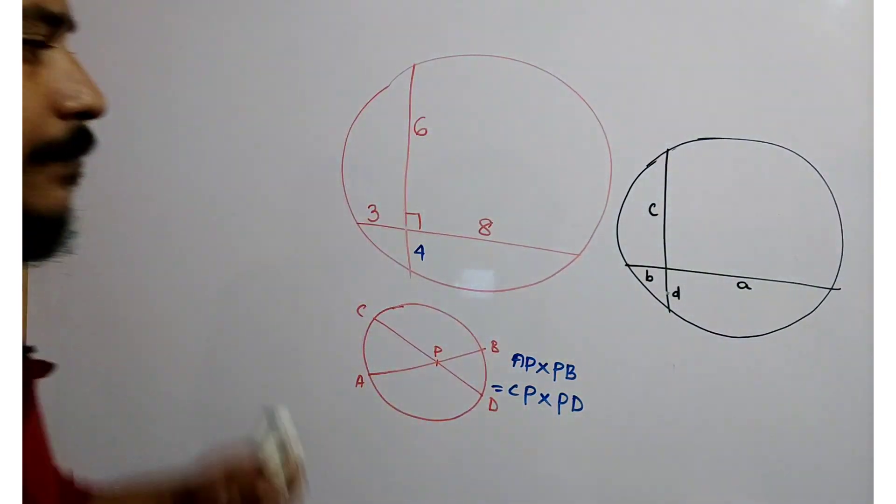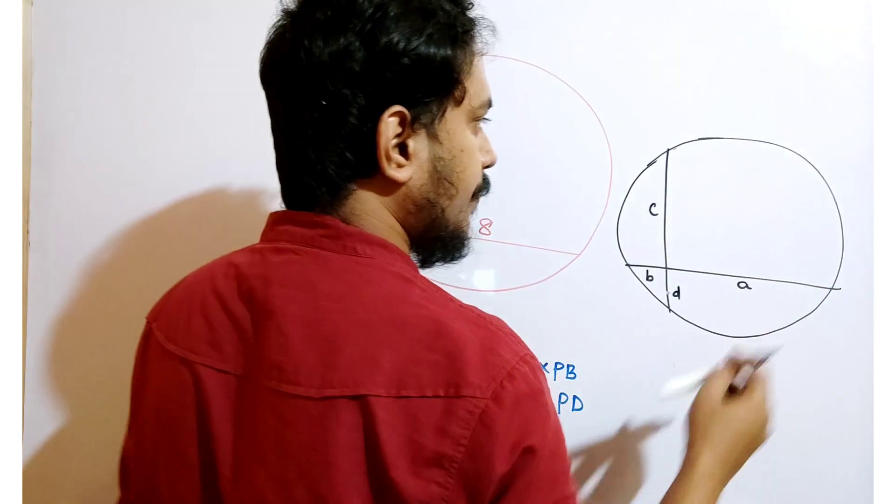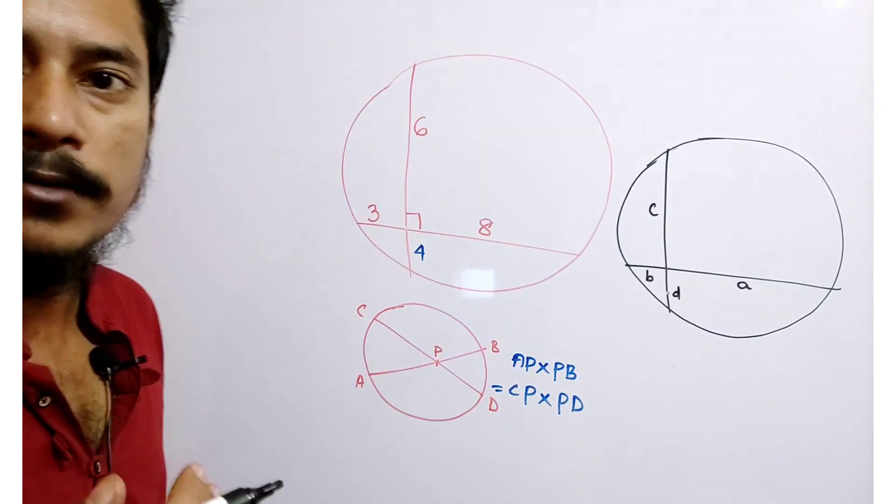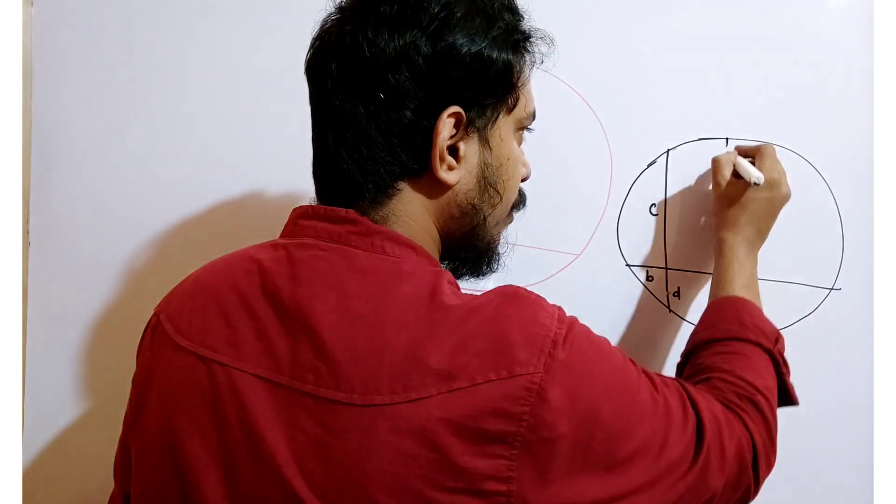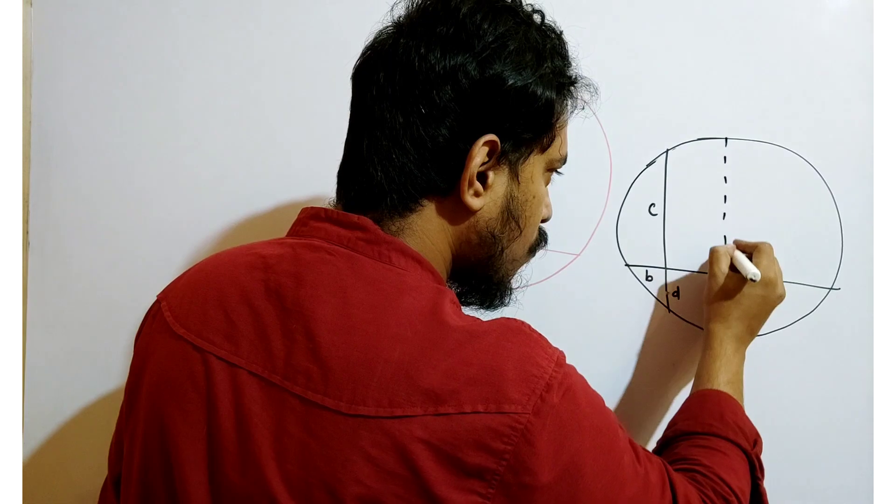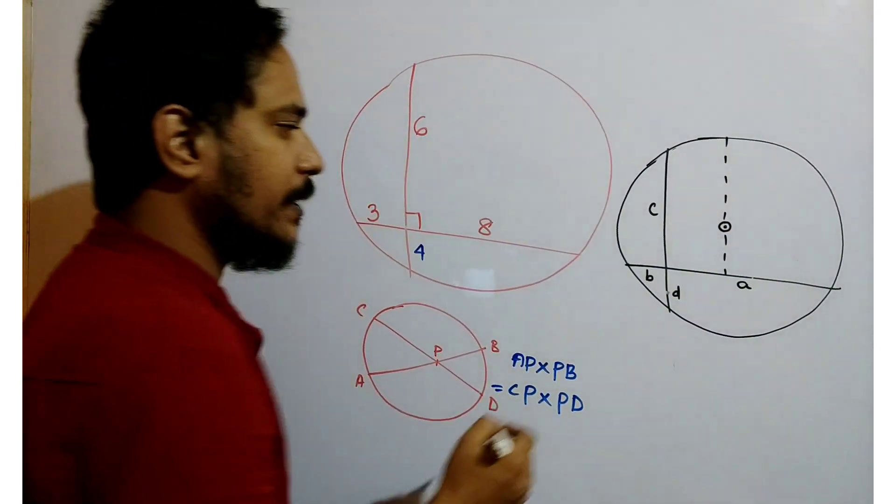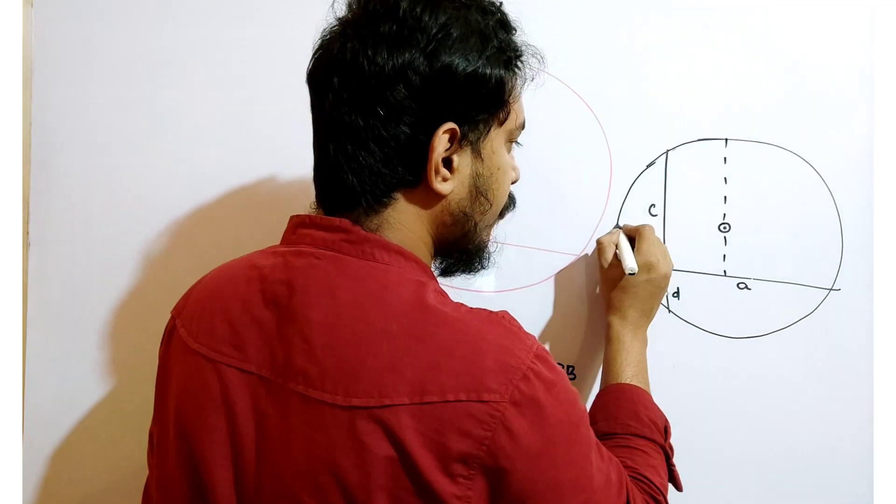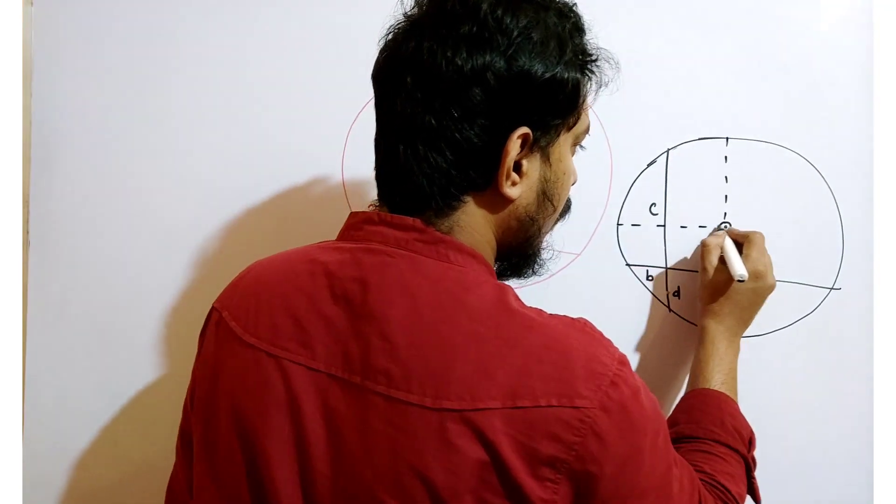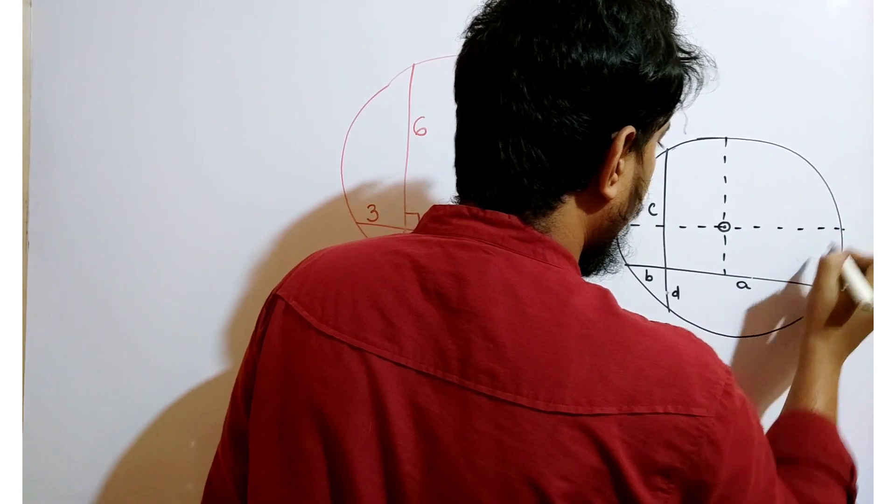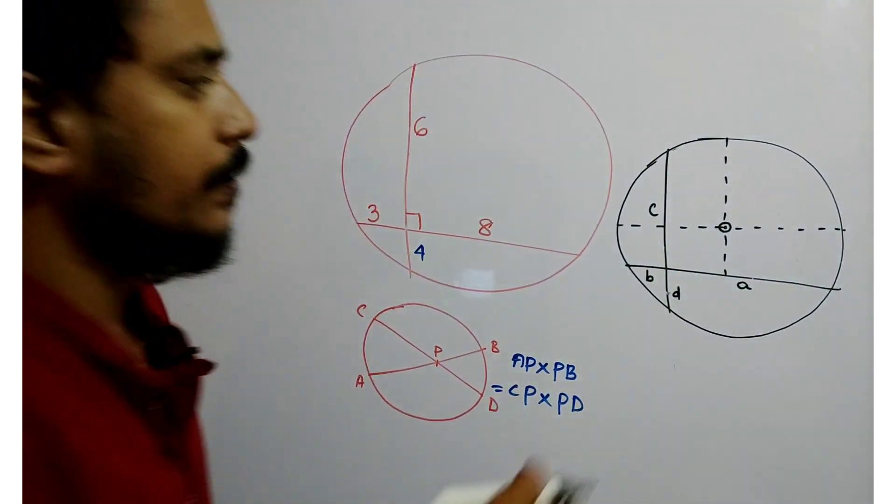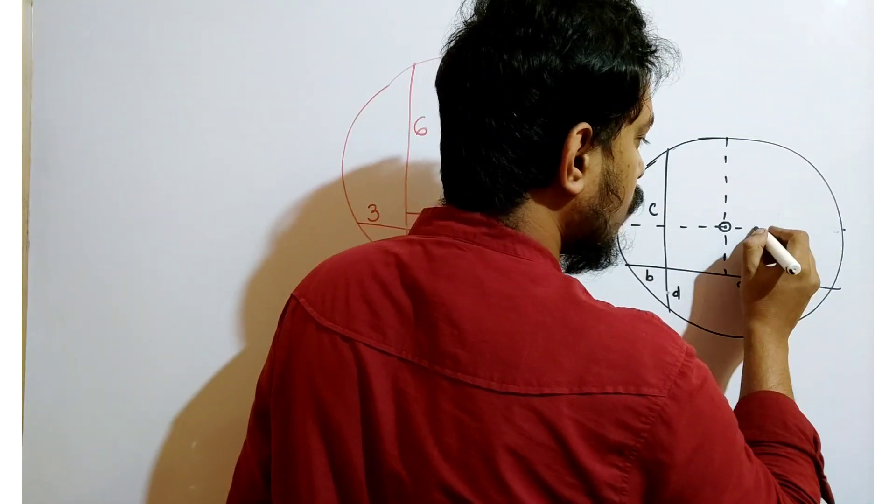if we draw a perpendicular bisector which obviously passes through centre. Similarly, if we draw a perpendicular bisector on this chord, that obviously passes through centre.